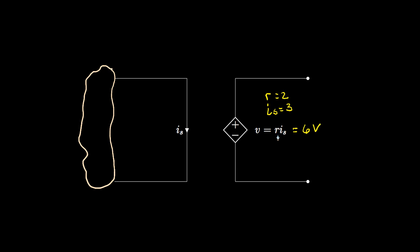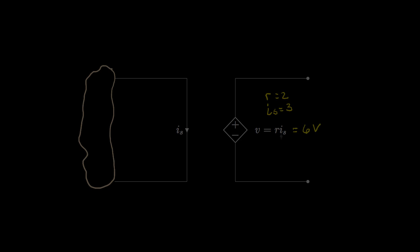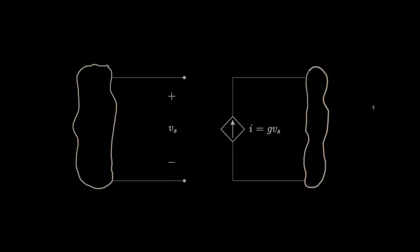We can also have a current source whose current depends on a voltage or current elsewhere in the circuit. Here is a voltage-controlled current source. Again, we use a diamond instead of a circle for the source symbol, and the arrow shows the reference direction for the current. In most situations, the current will be proportional to the controlling voltage, and here we've shown the proportionality constant to be G.